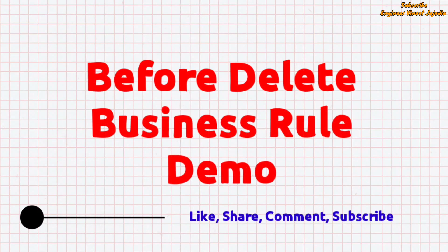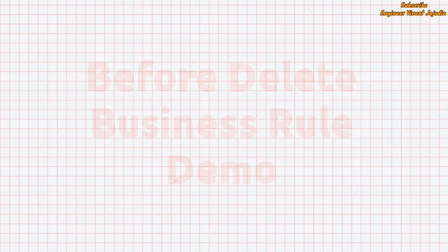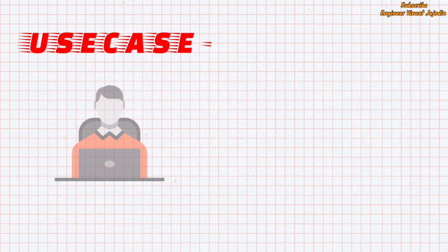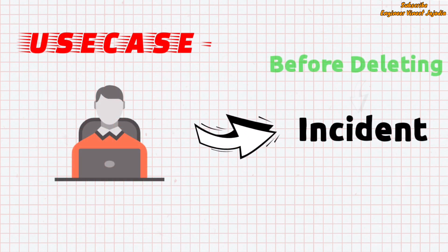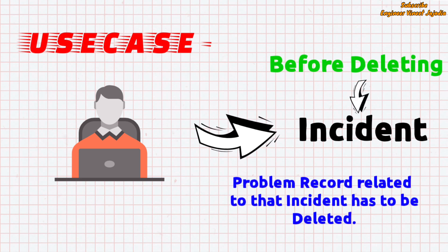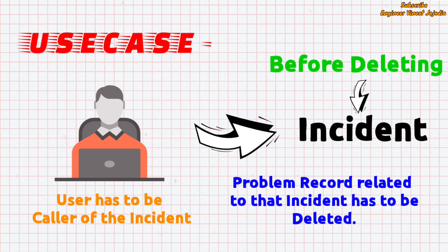Let's see the demo of a before delete business rule. In this demo, the use case is that if any user deletes an incident, then before deleting the incident, the problem record related to that incident has to be deleted. We also have to check one condition: the user has to be the caller of the incident. If the user is not the caller, then the user is not allowed to delete the incident. Let's see how we can build this functionality in ServiceNow with the help of a business rule.